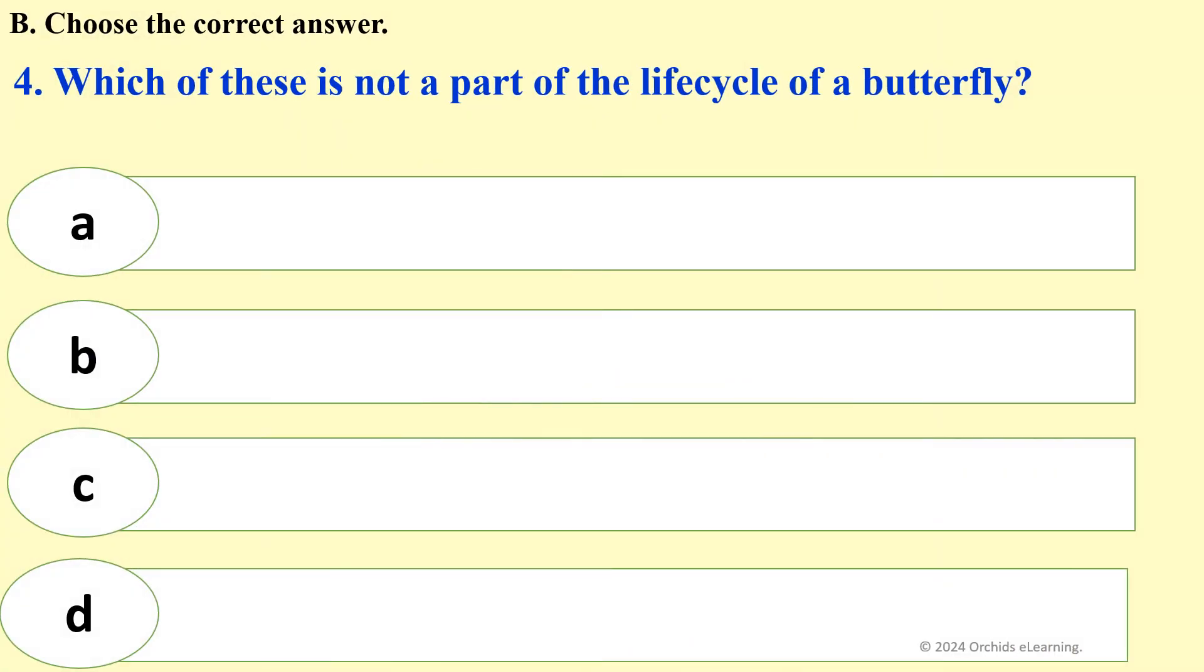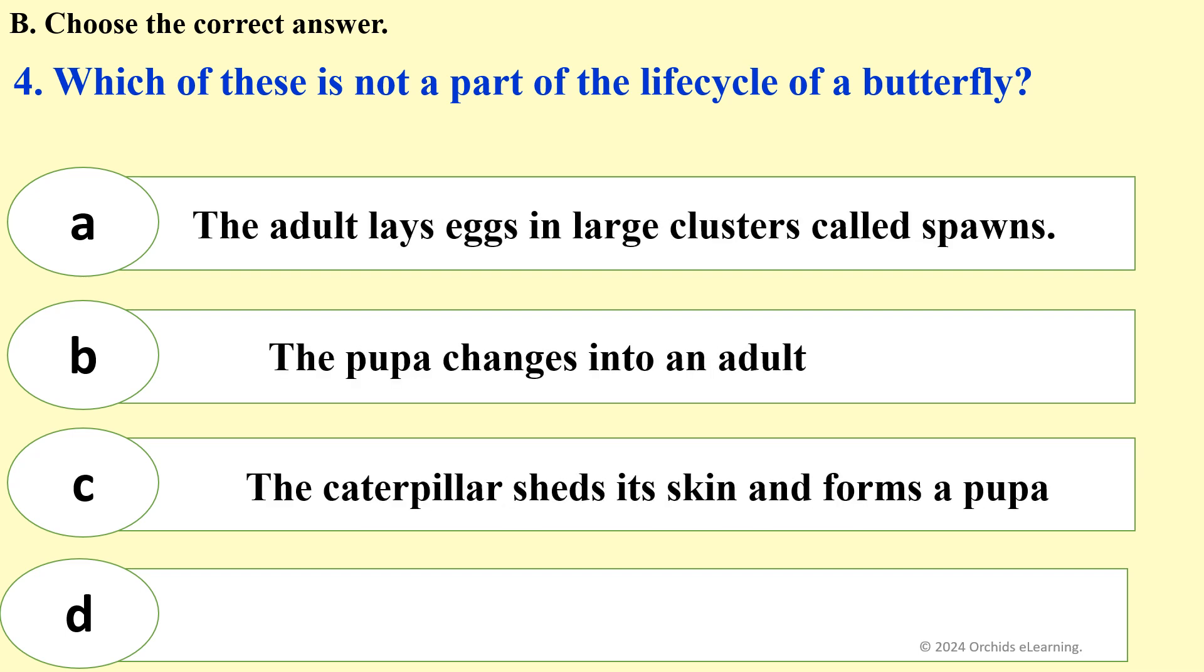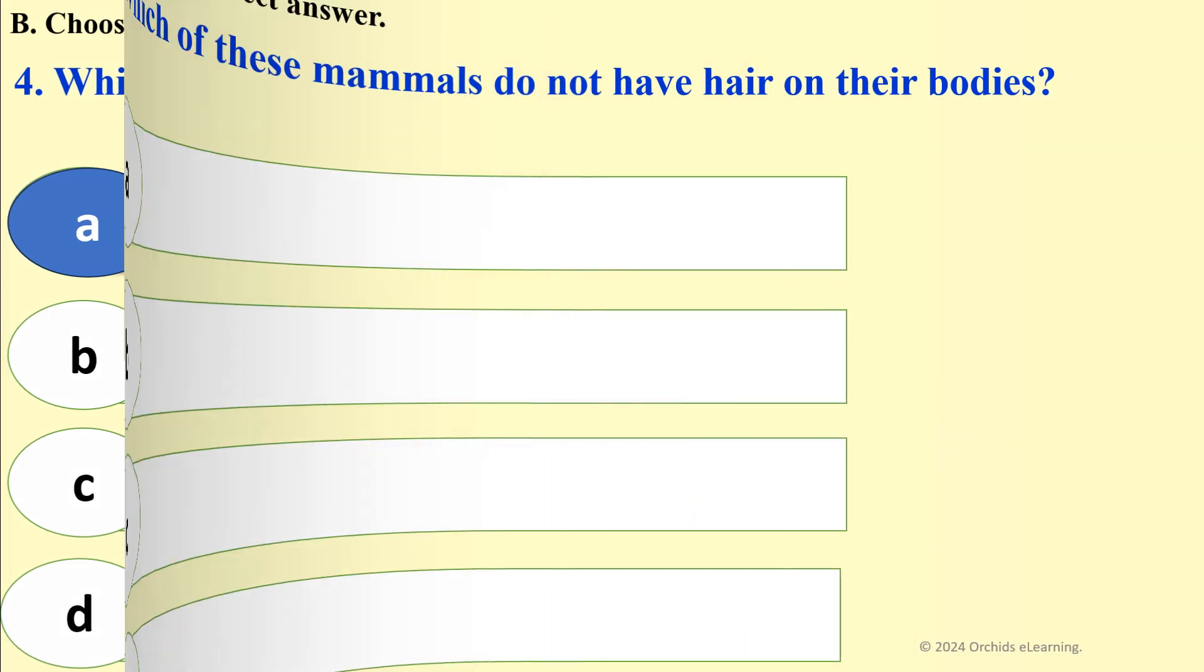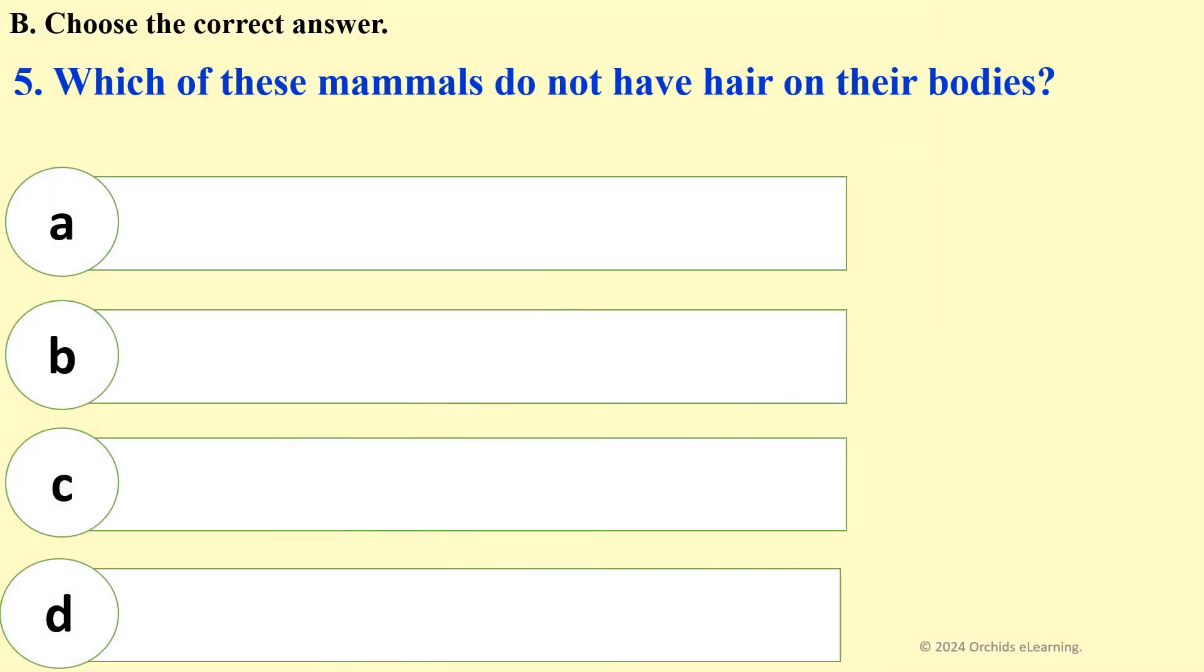Which of these is not a part of the life cycle of a butterfly? The adult lays eggs in large clusters called spawns.